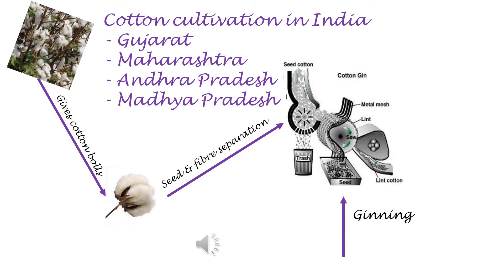Cotton plants grow in black soil and warm climate. When the plants mature, cotton bolls burst open. Seeds from cotton bolls are separated to get cotton fiber. This process is called ginning of cotton. In India, cotton plants are mainly grown in Gujarat, Maharashtra, Andhra Pradesh, and Madhya Pradesh.